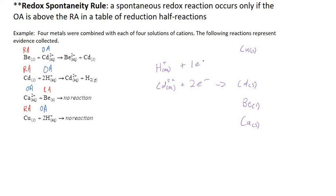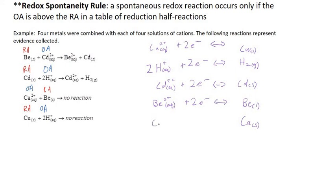Now we just have to complete our table. We add two electrons to 2H⁺ to form H₂ gas, so: 2H⁺ plus two electrons forms H₂. Let's also make sure all of these reactions have double-headed arrows. For copper: Cu²⁺ plus two electrons forms copper solid. For beryllium: Be²⁺ plus two electrons forms beryllium solid. For calcium: Ca²⁺ plus two electrons forms calcium solid. We've now used our rule — based on whether a reaction is spontaneous — to determine whether the oxidizing agent or reducing agent comes above the other in the table, and built our table from there.